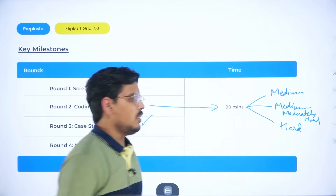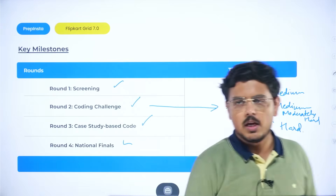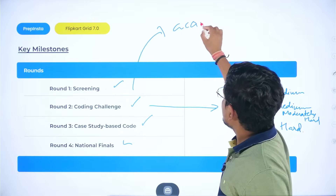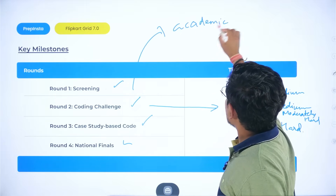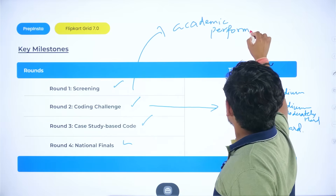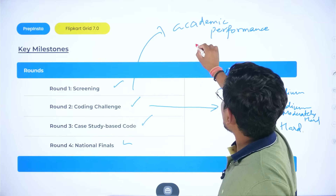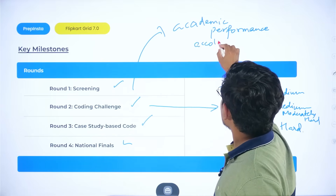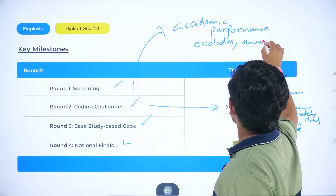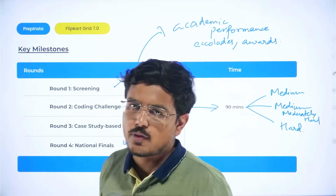In the screening round, you will be shortlisted based upon your academic performance — how consistently good you have been in academics — along with your accolades, awards, and things like that. All of that matters in the first round.